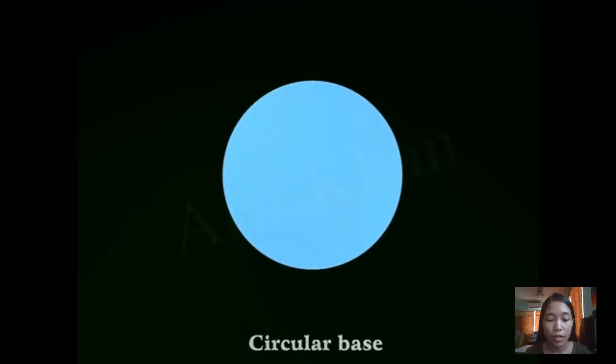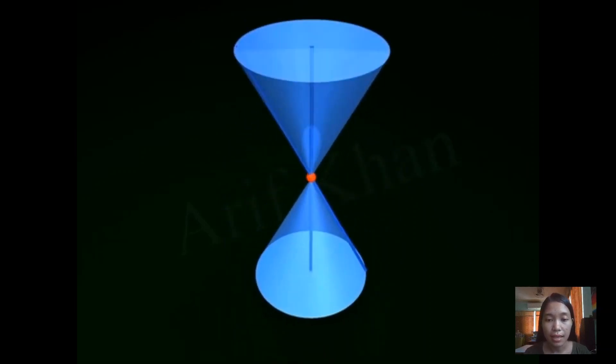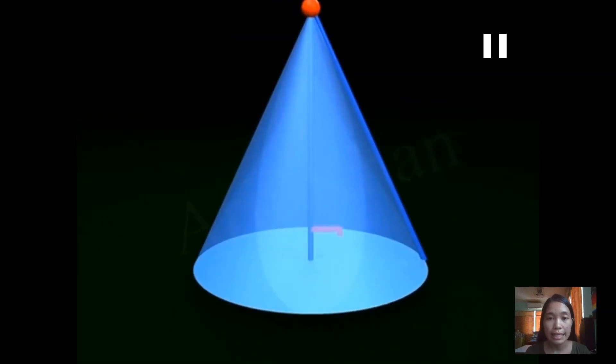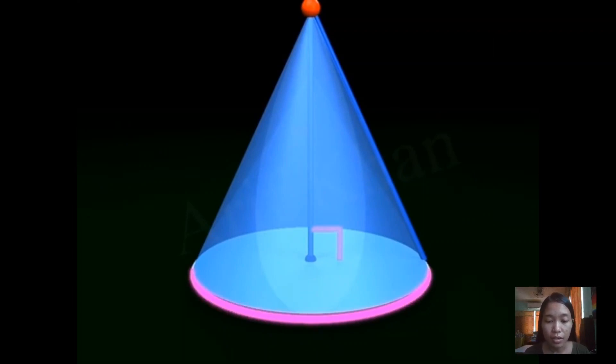Now the double right circular cone has two circular bases. That's the base of our cone. Now as we take a closer look, the vertical line is perpendicular to the circular base at the center of the circular base, perpendicular to the axis or vertex. Then, the perimeter of the base is called the directrix.